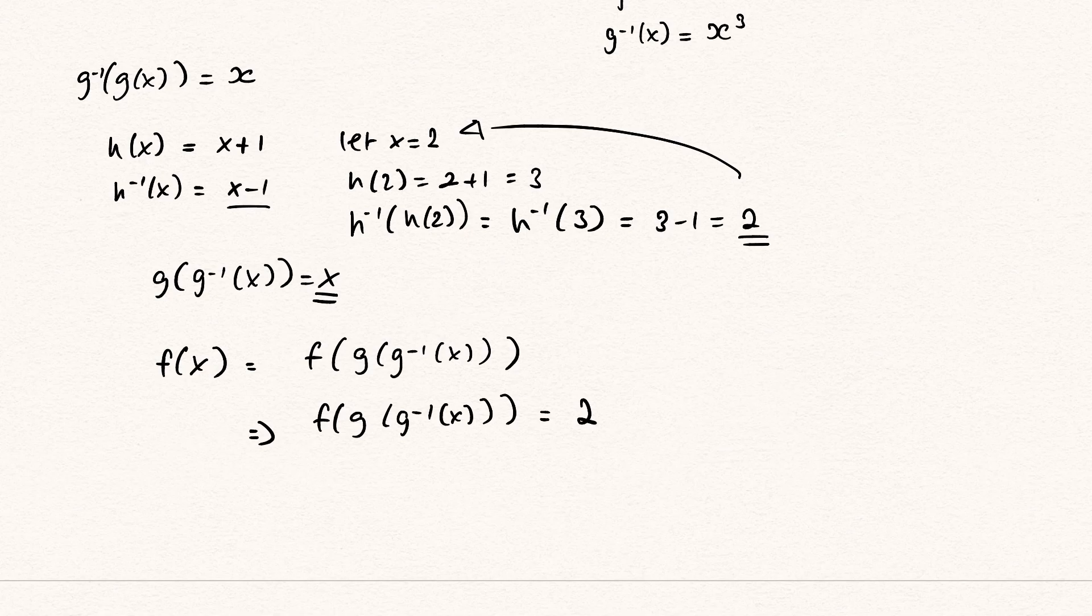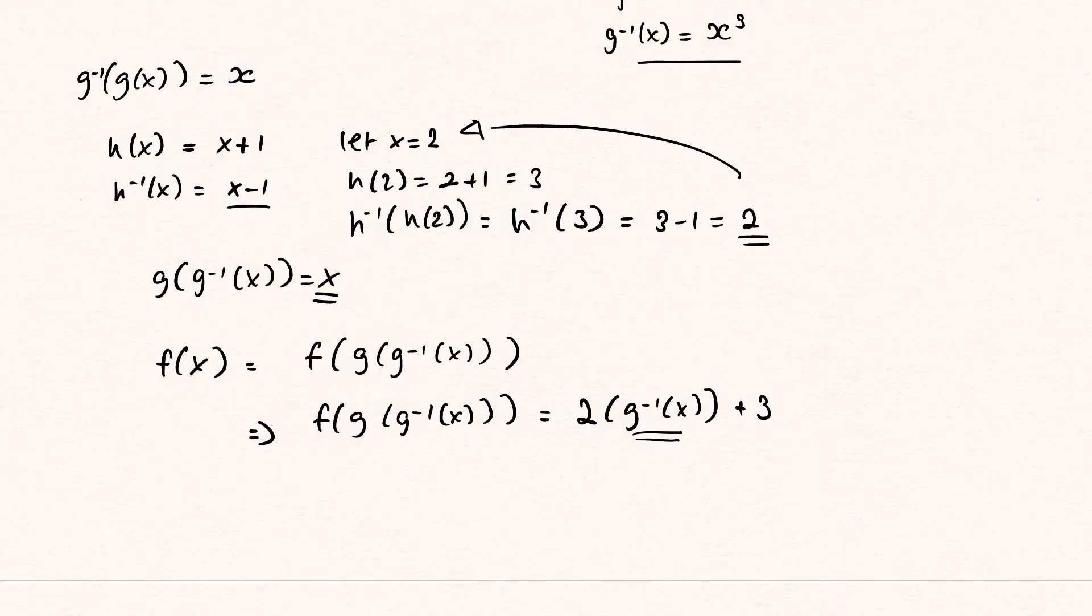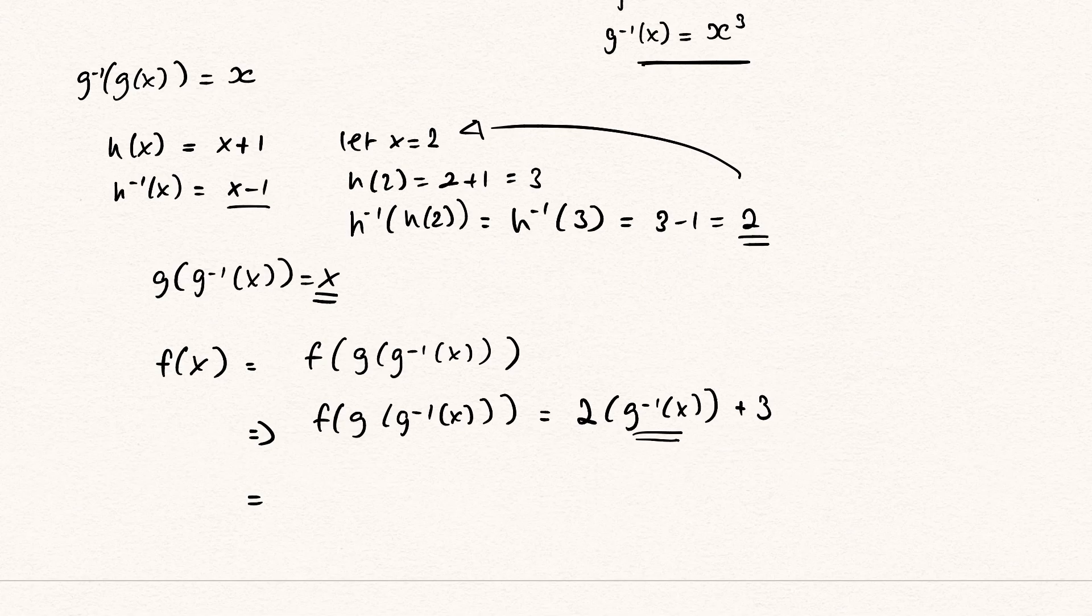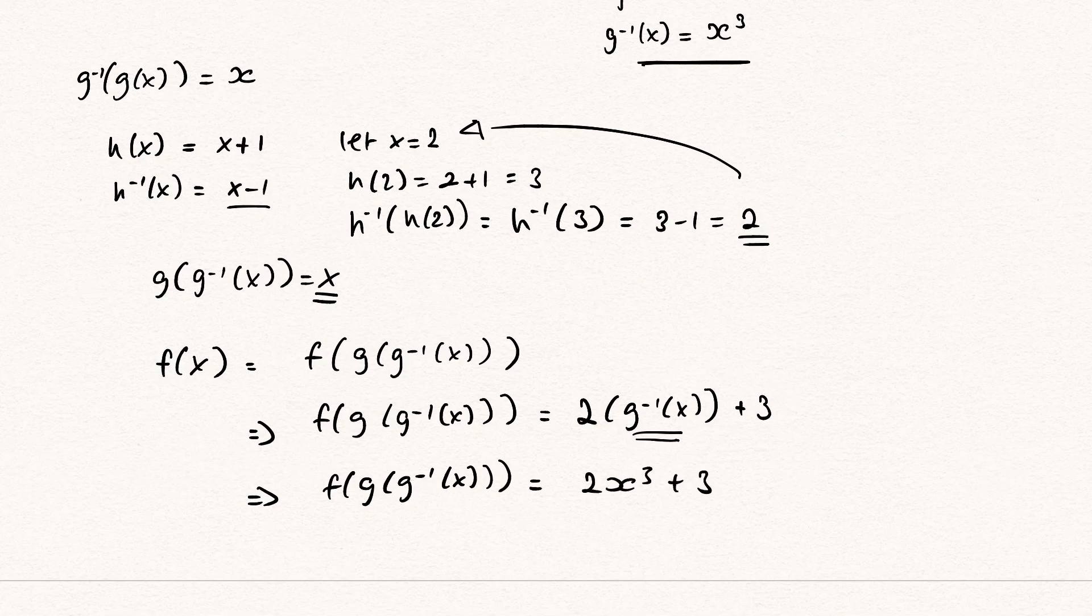Well, that's just 2 times g^(-1) of x plus 3. And we know what g^(-1) of x is. It's right here. We know that g^(-1) of x is x cubed. So we can just say that f of g of g^(-1) of x equals 2x cubed plus 3.